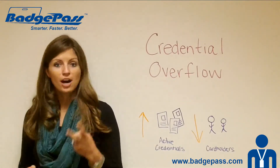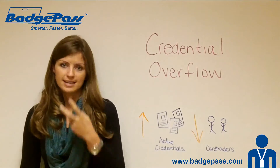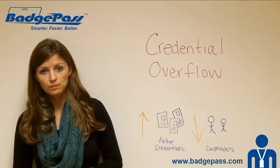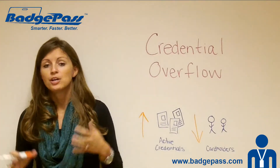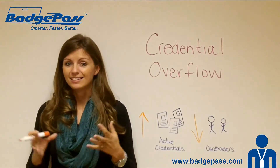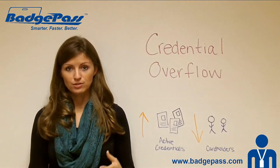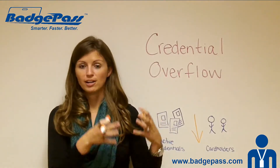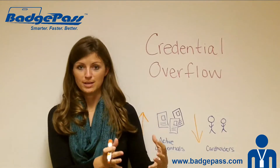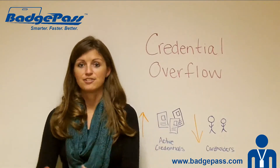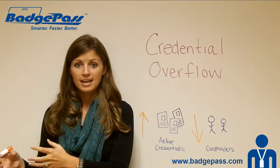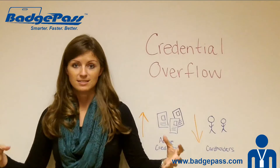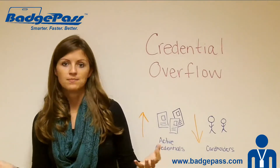There are two causes for why that doesn't happen, and this week we're going to talk about the first one. In a lot of access control systems, your HR database is over here, where all of your cardholder information usually is, and your access control database is over here. And honestly, those two databases simply don't communicate together seamlessly.